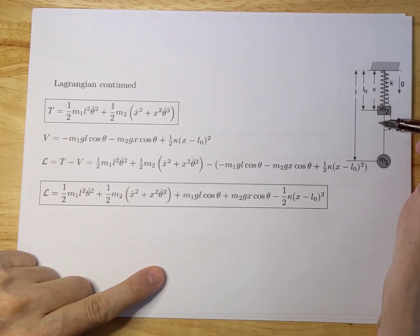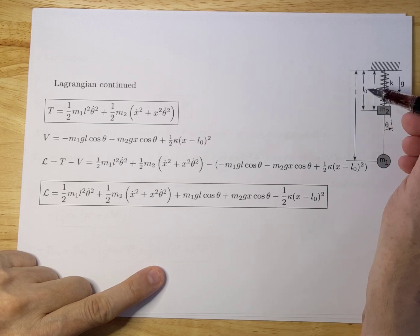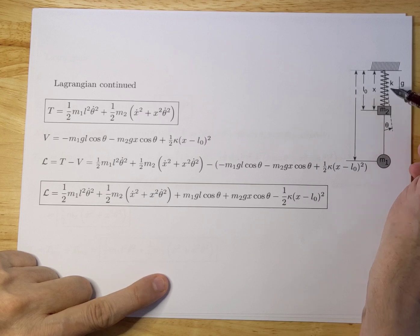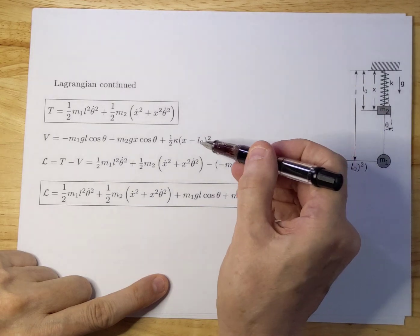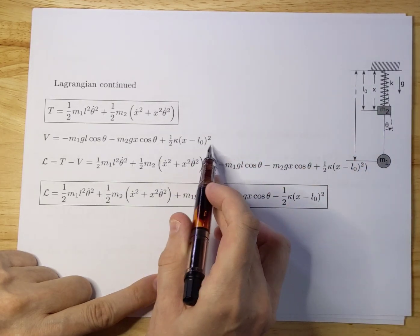L zero is the length if you have the system in equilibrium. The spring sags due to gravity and it sags at a certain location, that location is L zero. At point t equals zero, if you don't do anything, X will be exactly L zero and this will be zero.